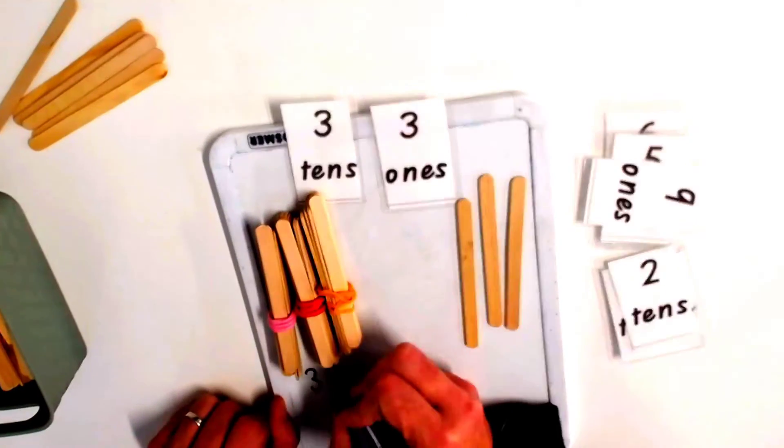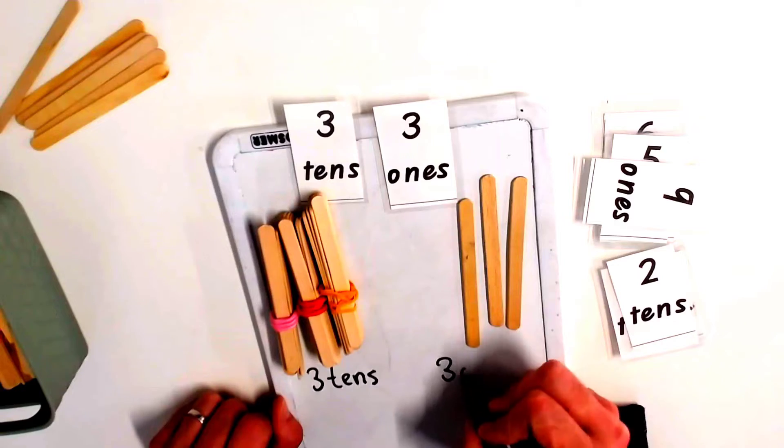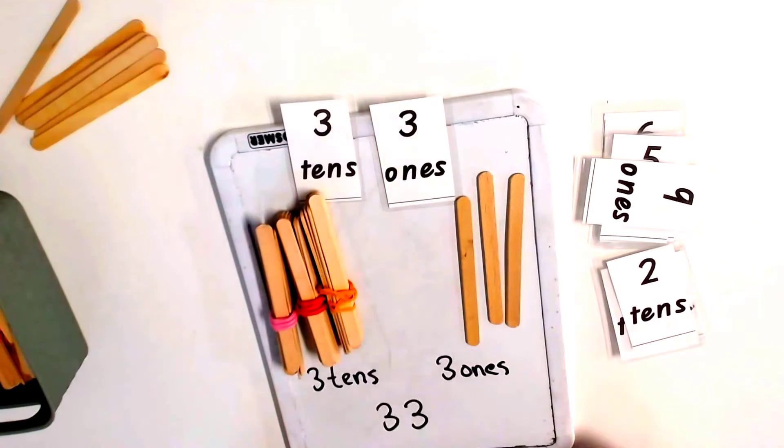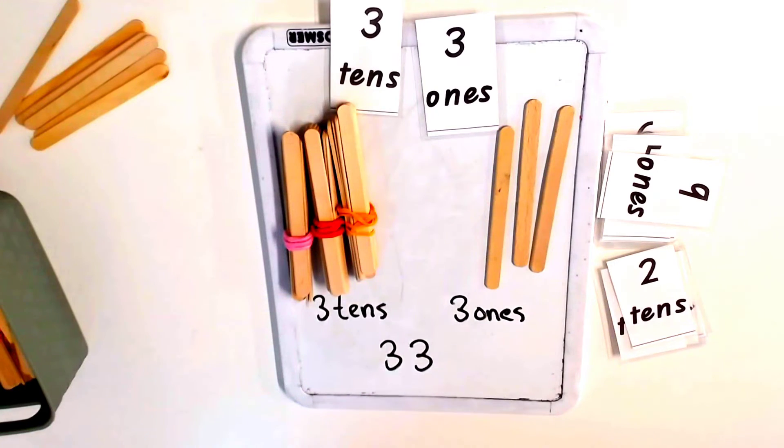I can now record that in my workbook. Here I'll do it on the whiteboard. Three tens and three ones makes 33. Then it's time to get a new number.